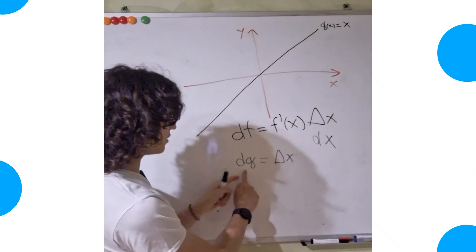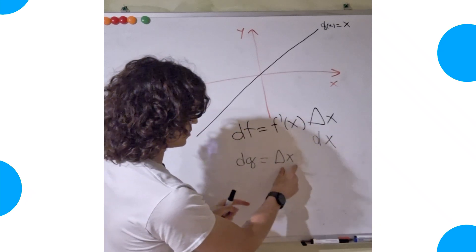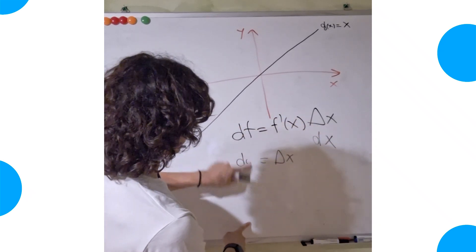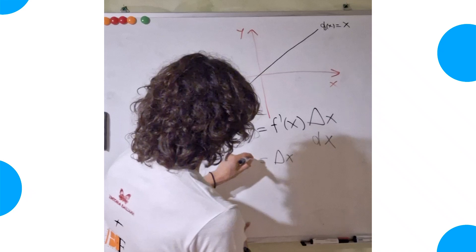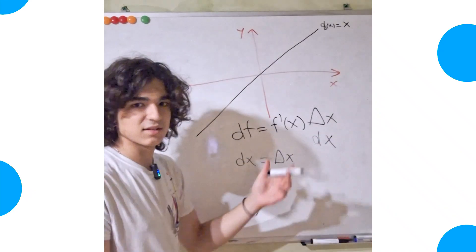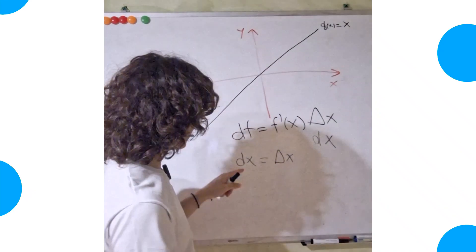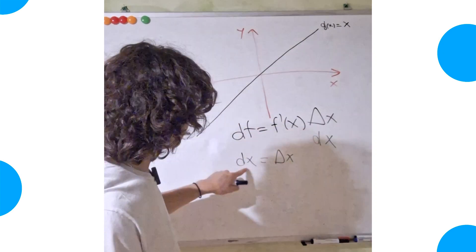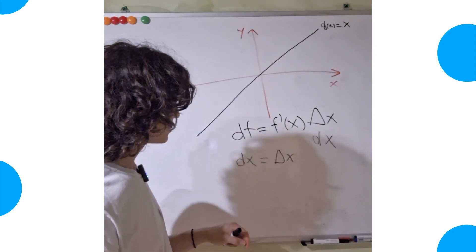So as you can see the differential equals the increment. And since the function equals x, we can replace this by an x because this is the name of the function. And as you can see, dx equals delta x.